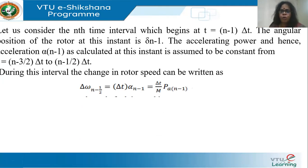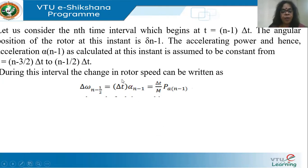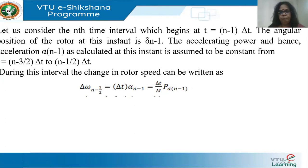The speed at the nth interval, ωₙ₋₁/₂, equals the speed at the middle of the previous interval plus the change in speed. In discrete solutions, the new value is always the old value plus the change. The speed ωₙ₋₁/₂ is assumed constant throughout the nth interval from t = (n−1)·Δt to t = n·Δt. The accelerating power is constant from the preceding half-interval to the next half-interval.